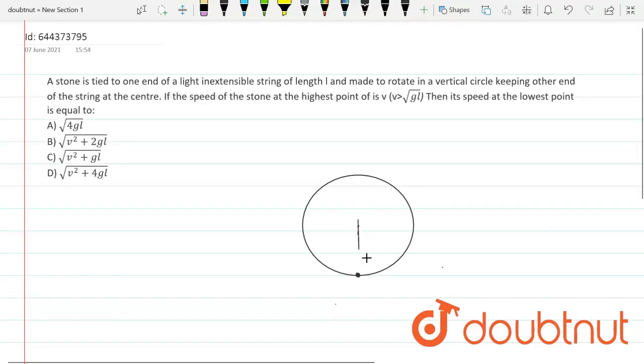So for this particular system, I can write if the velocity given to this particular object at the lowest position is V1 and it is given that at the highest position of its trajectory, the velocity is V, which is greater than root GL, where L is the radius of the circular track in which the particle is moving.